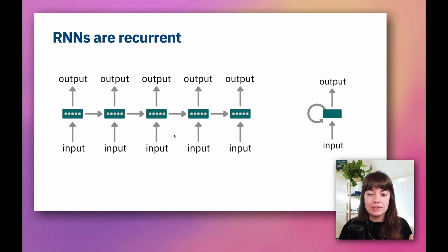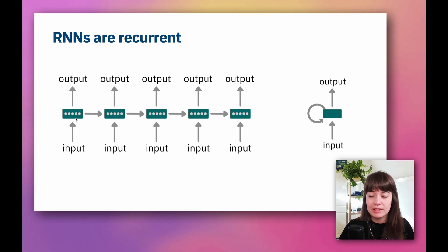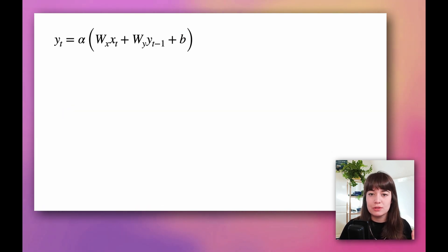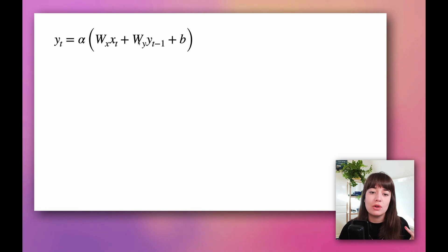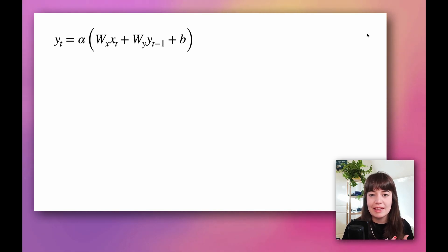In each of these time steps, except the first one, you have two inputs: one is the output from the previous time step, and one is the input of this time step. How do we calculate the output of recurrent neural networks? We do it with a formula — you have weights for your inputs, so for each time step you have the weights. For all of the outputs from the previous step you have another set of weights. You also have the biases. All of this is passed through an activation function, and at the end you have the output of your recurrent neural network.